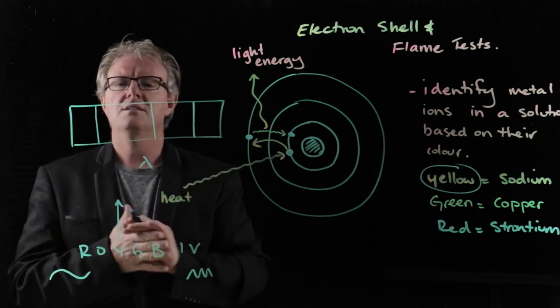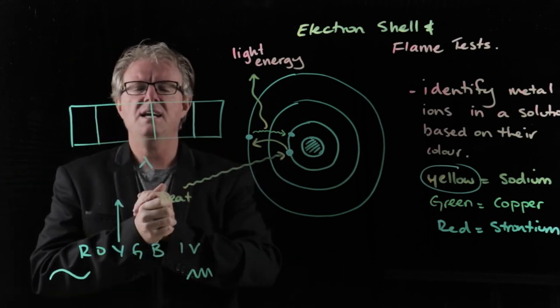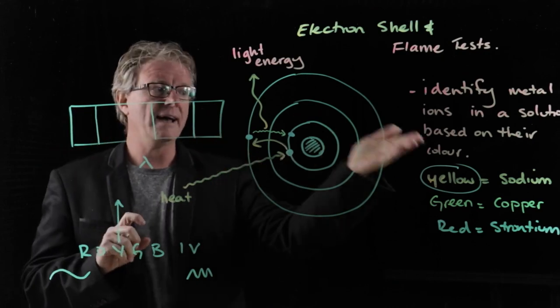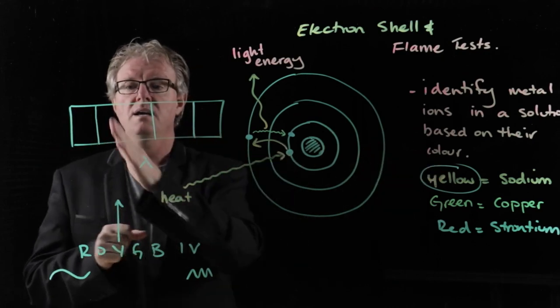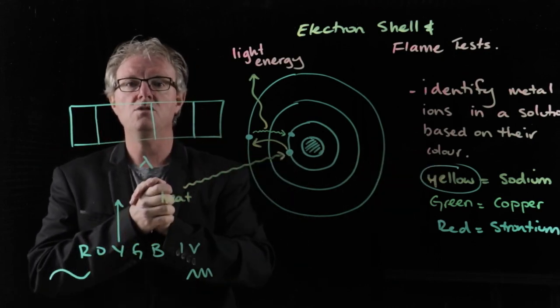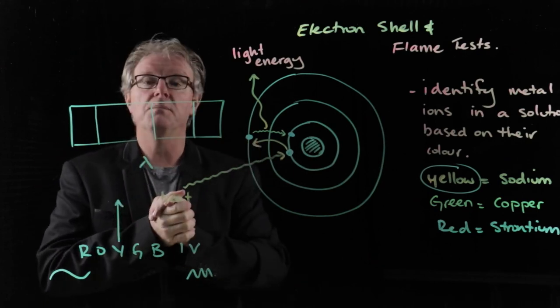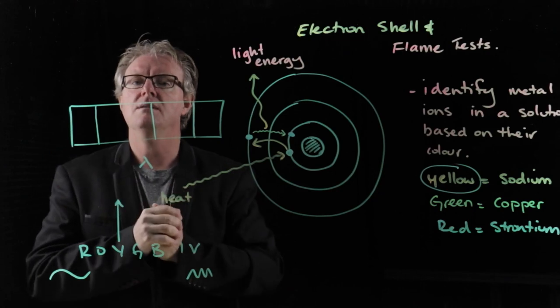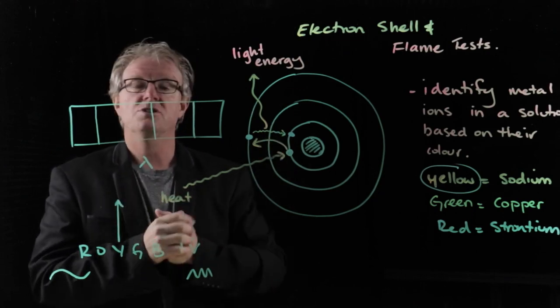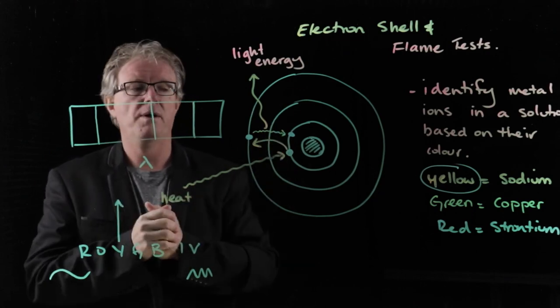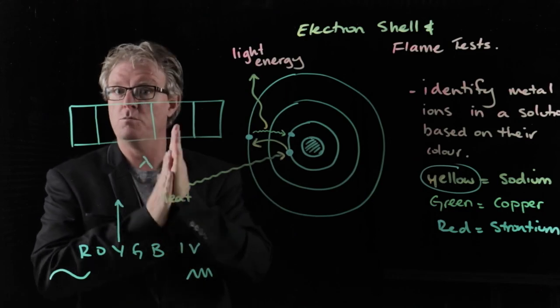And so it's like a fingerprint. And so we can use this understanding that if we use instruments to analyze the light that's coming away, it's like a fingerprint pattern that we can use to determine what type of element is present and how much is there. It's pretty cool. So that's electron shells and flame tests. Have fun doing the prac. And I'll catch you in the next video for more chemistry.